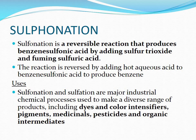Next we will see benzene sulfonation. Sulfonation is a reversible reaction that produces benzene sulfonic acid by adding sulfur trioxide and fuming sulfuric acid. The reaction is reversed by adding hot aqueous acid to benzene sulfonic acid to produce benzene. Sulfonation and sulfation are major industrial chemical processes used to make a diverse range of products including dyes, color intensifiers, pigments, medicinal pesticides, and organic intermediates.